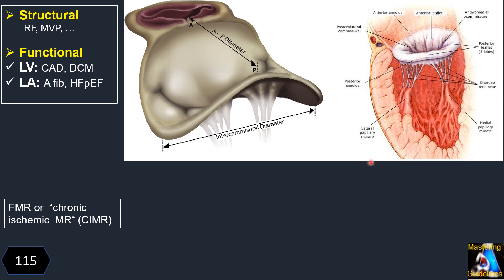From a pathophysiology aspect, MR can be divided into structural and functional types. In structural MR, there is some pathology on the leaflets. In functional MR, the structure and function of the leaflet is almost normal, but there is a problem on the subvalvular apparatus — including chordae tendineae, papillary muscle, and left ventricular walls.